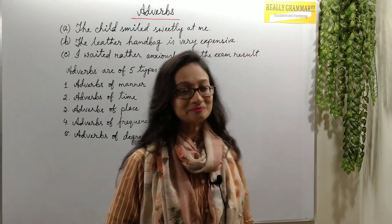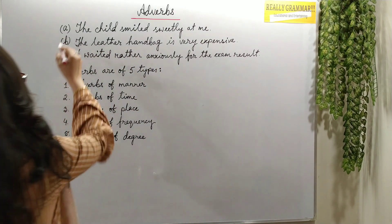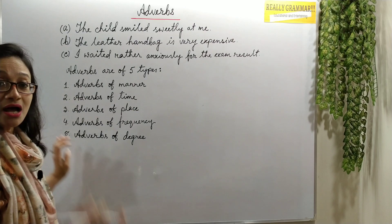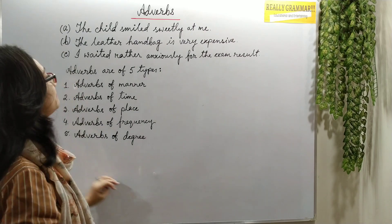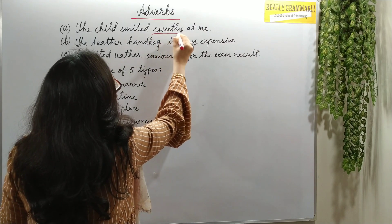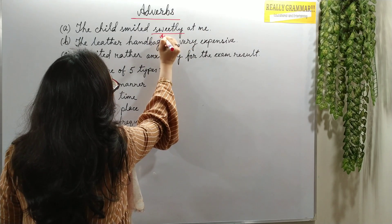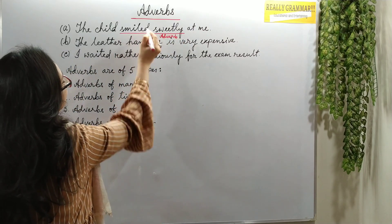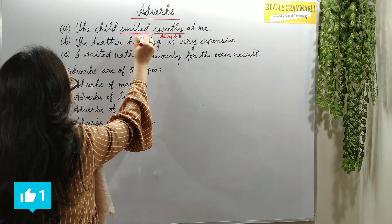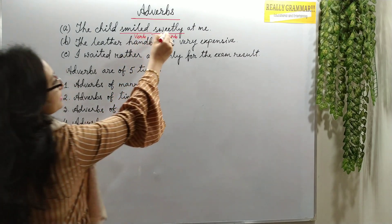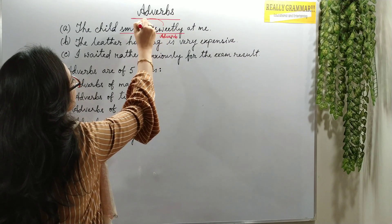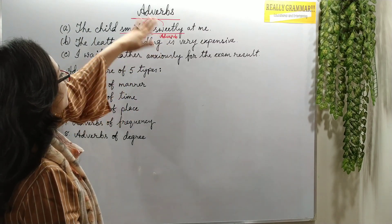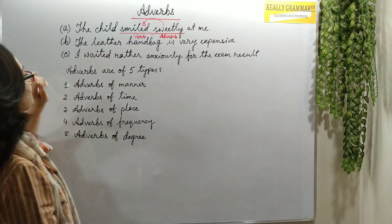Now let's see. Here, the first sentence: 'The child smiles sweetly at me.' Sweetly is an adverb, and smiled is a verb. This adverb sweetly is modifying the verb smiled.